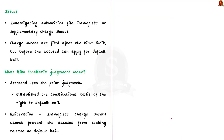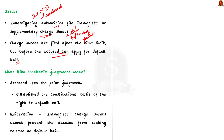However, the protection under Section 167(2) has been weakened in practice. Investigating authorities often file incomplete or supplementary charge sheets within the 60 or 90-day period to prevent the accused from seeking default bail. In some cases, charge sheets are filed after the time limit but just before the accused can apply for default bail — essentially, if the accused is about to seek default bail tomorrow, police manage to submit the charge sheet today, thereby blocking the accused from seeking it.